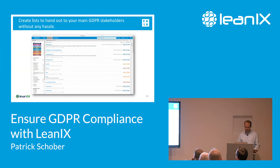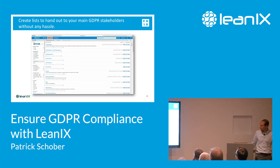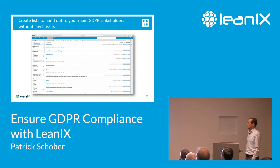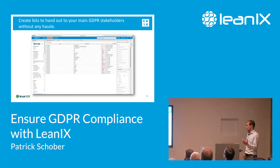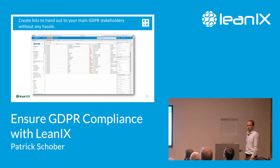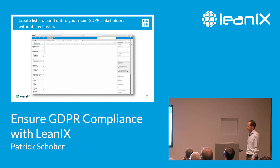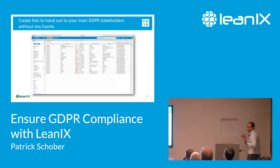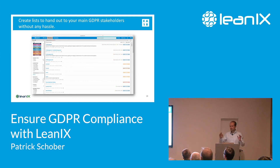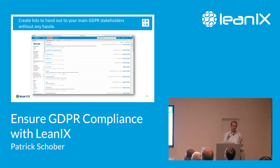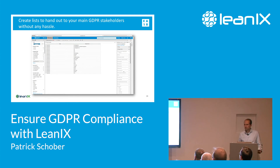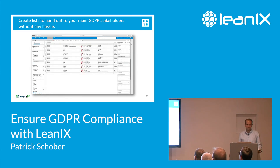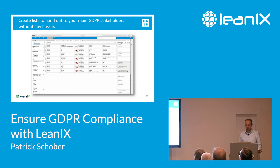To do this in LeanIX, you go to the inventory, start the table view, click on the attributes and information you actually need to make up your list, then export it as an Excel file, bookmark it so the data protection officer can access it as a saved list, and so on. As I said, this has really turned out to be helpful in answering most of the questions regarding GDPR handling with LeanIX.